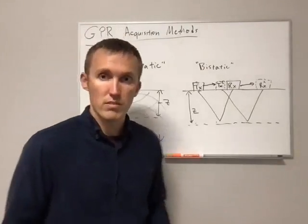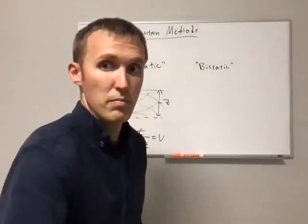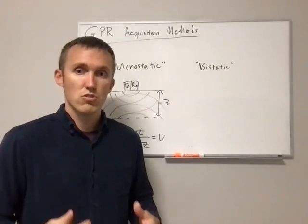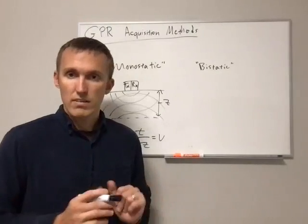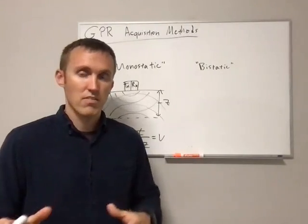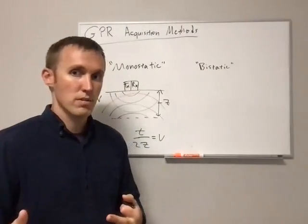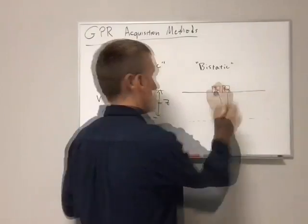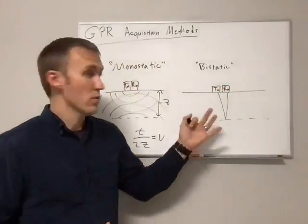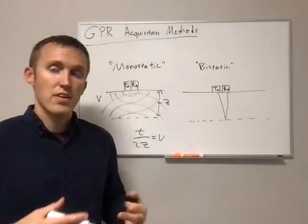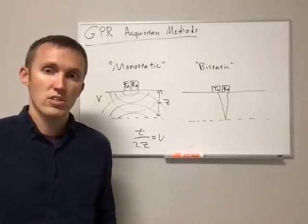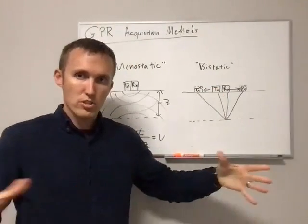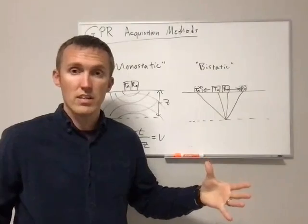Finally, we have what's called a Common Midpoint Acquisition Method. Like the WAR method, it allows us to get the layer interface depth as well as the velocity of that upper layer. It's more laborious because we have to move both antennas. We might start with the transmitting and receiving antennas right next to each other, then move them away from each other by the same distance.